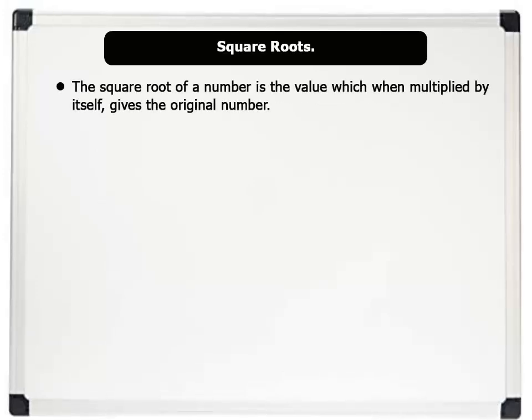The square root of a number is the value which when multiplied by itself gives the original number. The square root is represented by the symbol on the board. Note that the square root of a number is simply the opposite, or the reverse, of the square of that number.